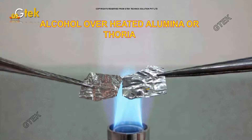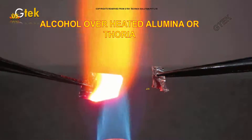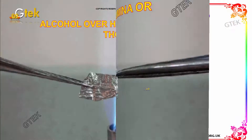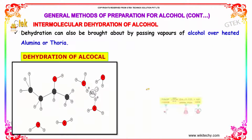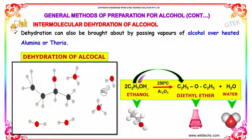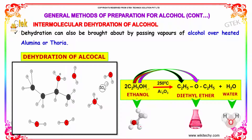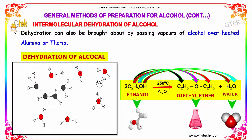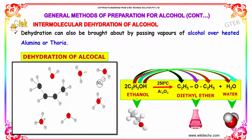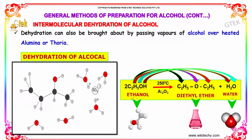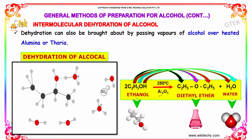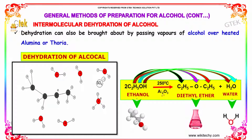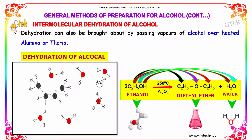Dehydration can also be brought about by passing vapors of alcohol over heated alumina or thoria. The following diagram represents the dehydration of alcohol. Here, ethanol in the presence of Al₂O₃ (aluminium oxide) at 250 degrees Celsius forms diethyl ether plus water.